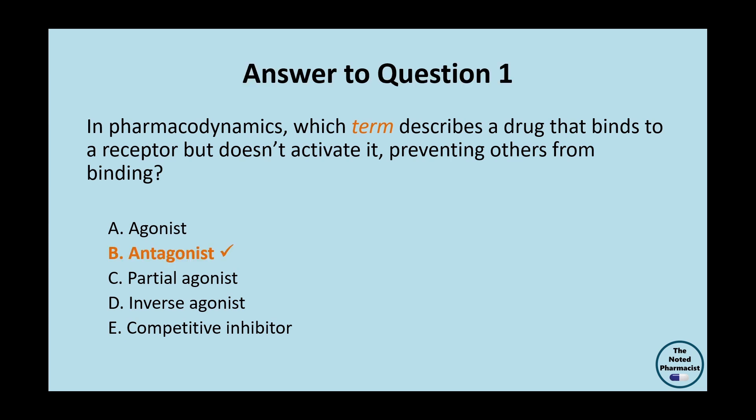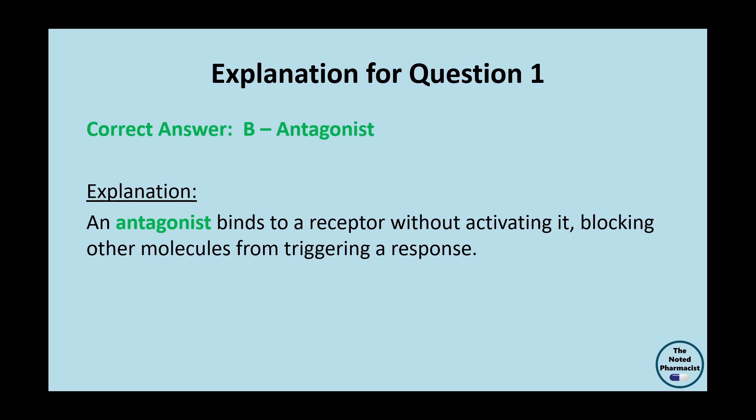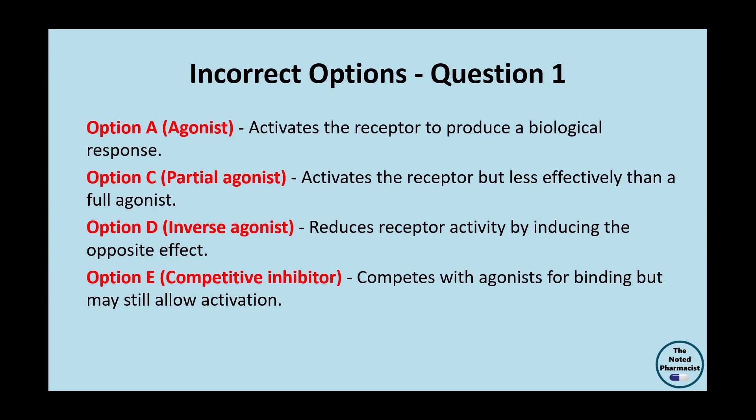The correct answer is Option B: Antagonist. An antagonist binds to a receptor without activating it, effectively blocking other molecules from binding and triggering a response. This action is crucial for modulating receptor activity and inhibiting potentially harmful overactivation. Option A, Agonist, is incorrect because an agonist binds to and activates the receptor to produce a biological response. Option C, Partial agonist, activates the receptor but with less efficacy than a full agonist. Option D, Inverse agonist, binds to the receptor and induces an opposite effect, reducing its activity. Option E, Competitive inhibitor, competes with agonists for binding but may still allow activation when bound.